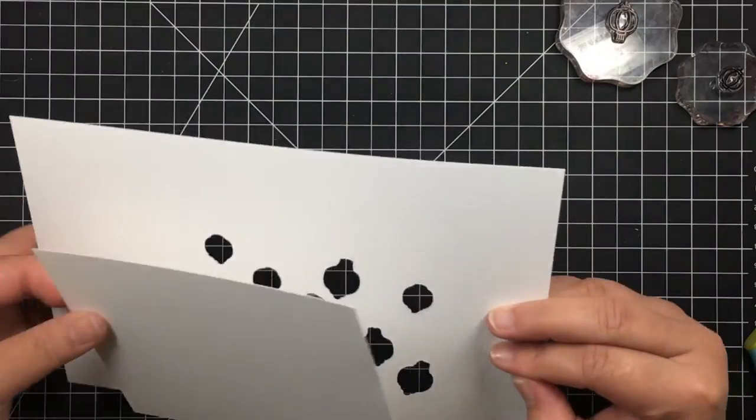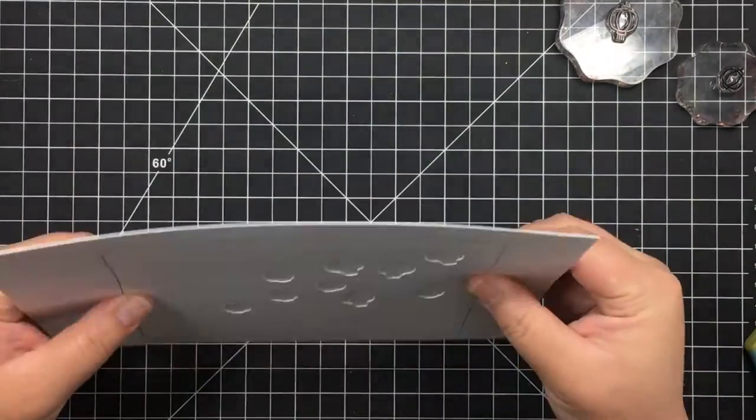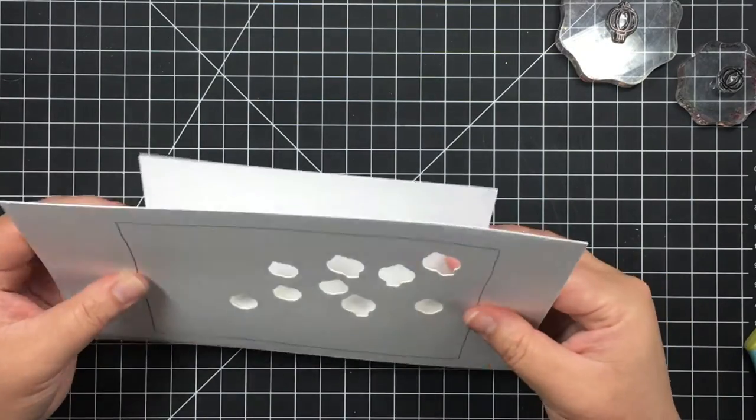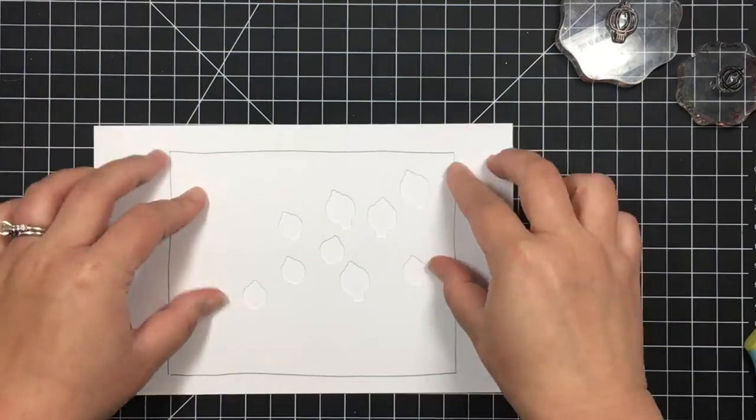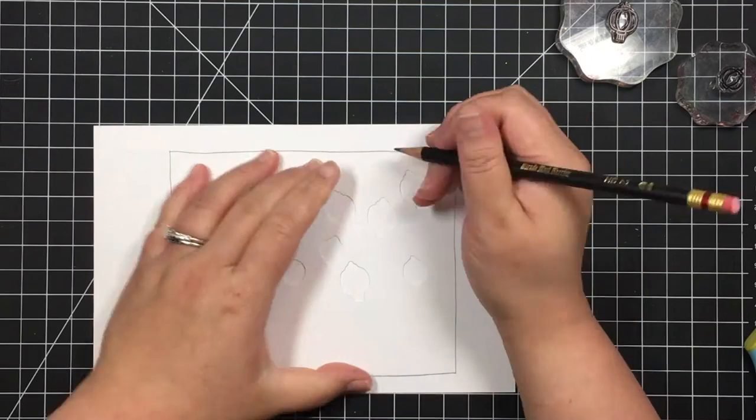Next I lay a piece of white cardstock behind my lanterns and trace the shape of each lantern. I will be creating my circuits on the white cardstock and this allows me to see exactly where to place my LED stickers.